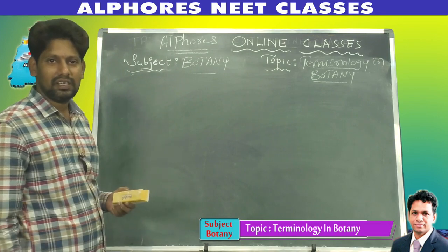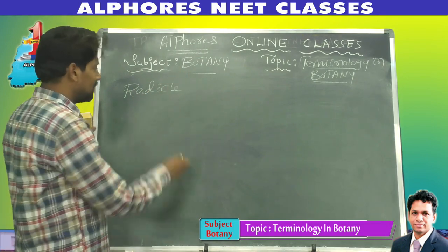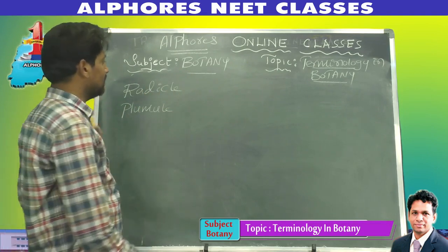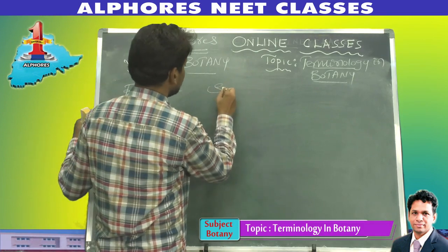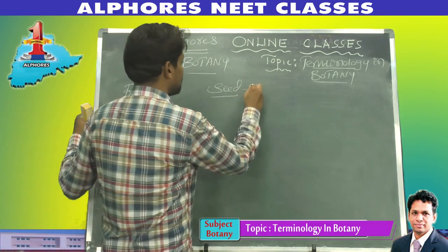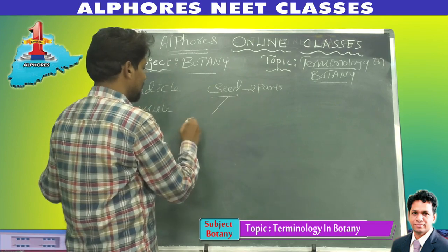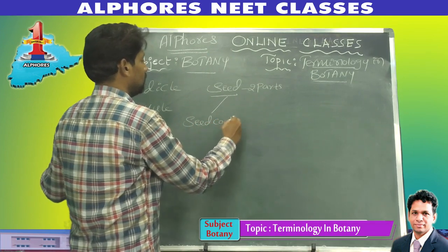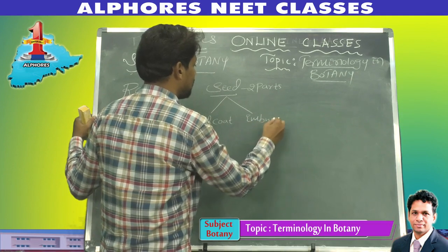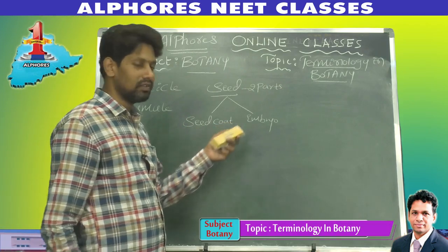Now, what is the meaning of radicle and plumule? Take a seed. Generally, a seed contains two parts: first is the seed coat, and second is the embryo.